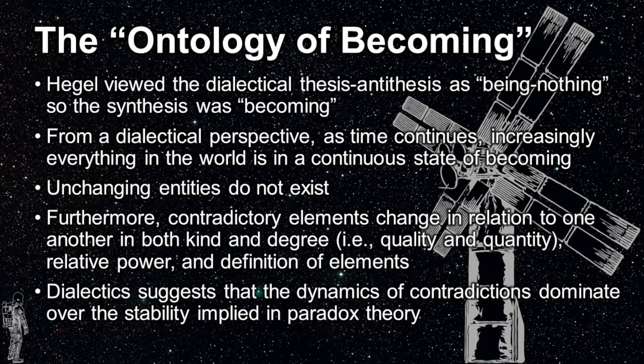One interesting derivative of the dialectical perspective is the ontology of becoming. Hegel viewed the dialectical process between the thesis, or being, and the antithesis of nothing. He considered the resulting synthesis of the two to be becoming. As time moves forward, everything in the world is increasingly in a continuous state of becoming, as contradictory elements come nearer and nearer to each other. The corollary of this thinking is that unchanging entities do not exist.